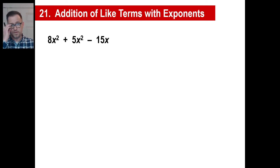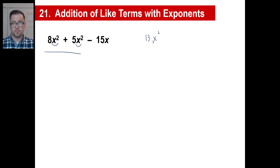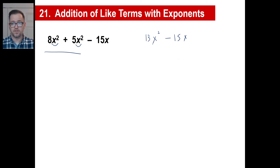Here's another one — pause and copy. One of these things is not like the others: the last one. The first two both have x with a 2 as an exponent, so those match. But the third has x with an exponent of 1. So only the first two are like terms: 8 of something plus 5 of something gives 13 of that something — so 13x squared — and then we subtract 15x. We cannot combine 13x squared and 15x — they're not the same.